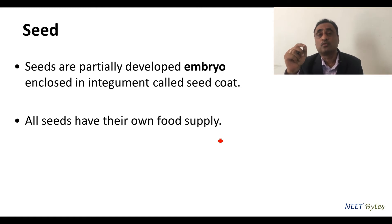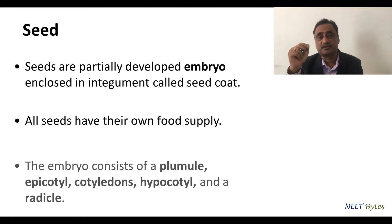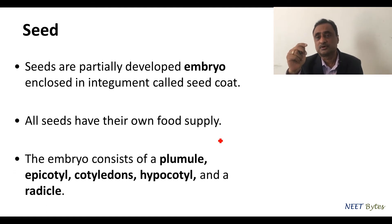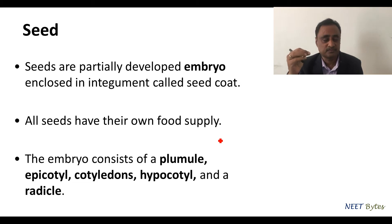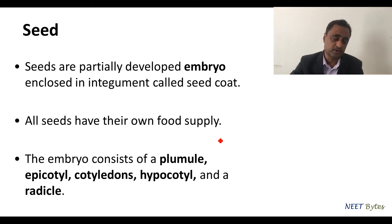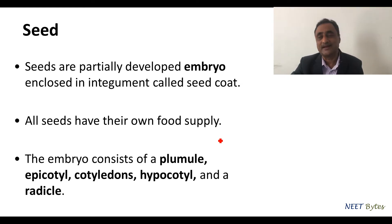All seeds have their own food supply. For instance, they have cotyledons, or if you talk about the monocot, they have endosperms where they can get their own food. A typical embryo consists of plumule, epicotyl, cotyledons, hypocotyl, and a radicle.